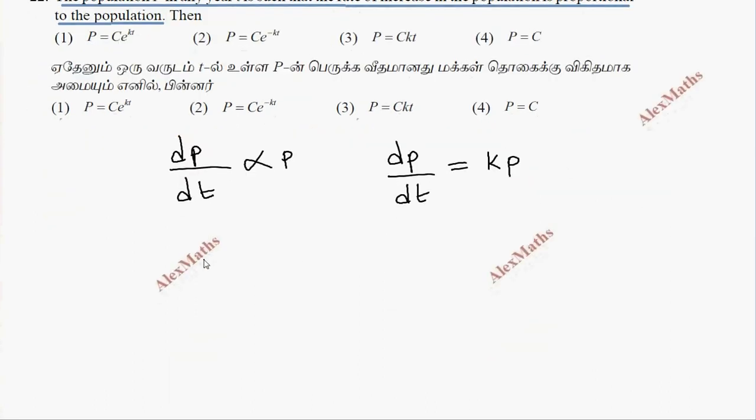We will use the variable separable method. So dp/p is equal to k into dt.